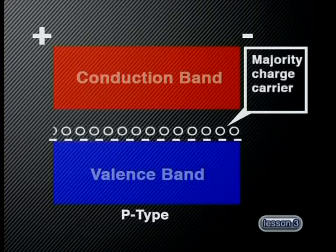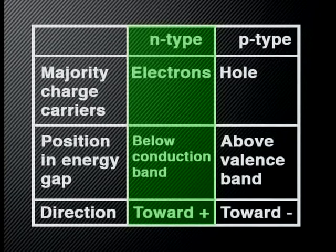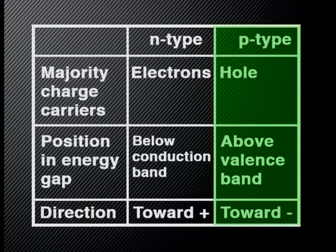Although both the N-type and the P-type silicon behave as conductors, the way in which the charges move is different. In N-type material, the extra electrons are the majority charge carriers and move in an energy level just below the conduction band, moving towards the positive terminal of the battery. In P-type material, the majority charge carriers are holes found just above the valence band, and the holes appear to move towards the negative terminal of the battery.